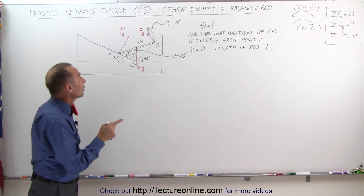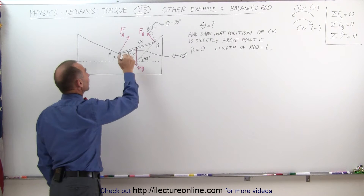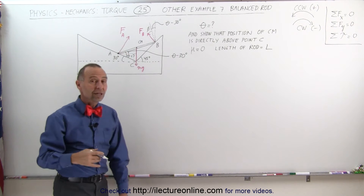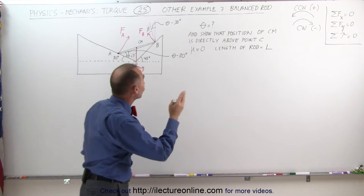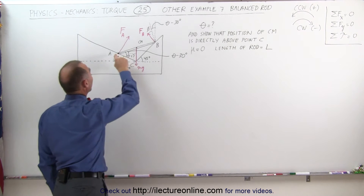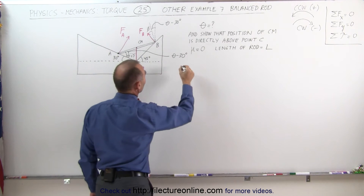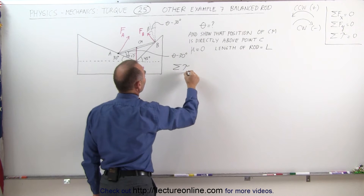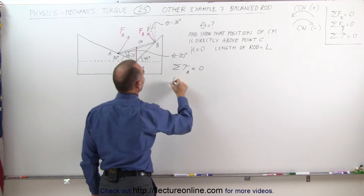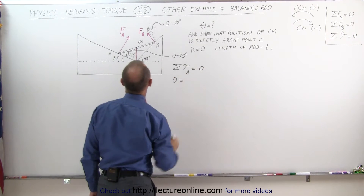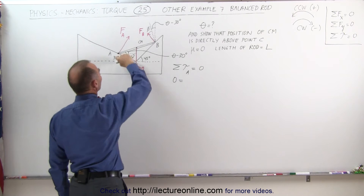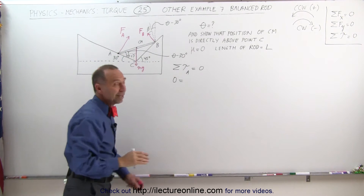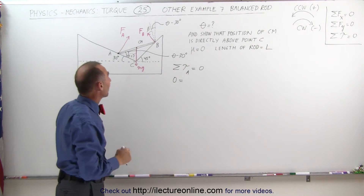What we're going to do is find angle theta by picking our pivot point at A and using the concept that the sum of all torques about point A must add up to zero. We don't have to worry about F sub A, because it goes right through the pivot point, so there's no torque caused by F sub A.